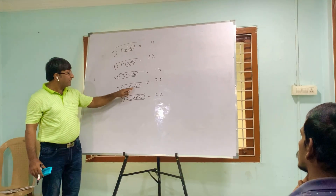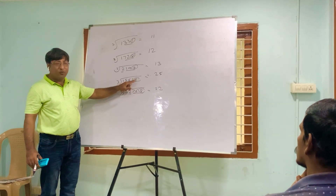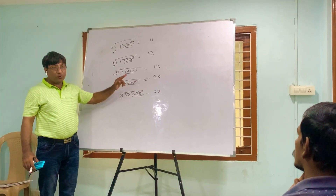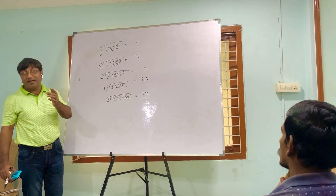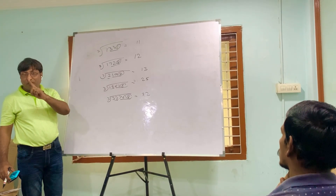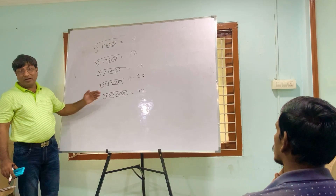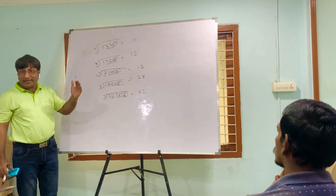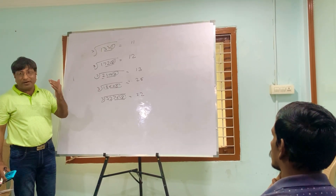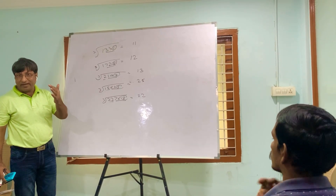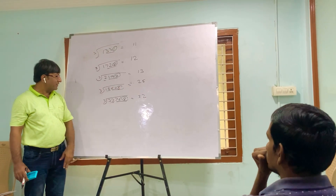For 15625: group of 3 is 625, unit 5. Multiply 5 three times — you always get unit 5. Write 5. Left number is 15: 2³ = 8, 3³ = 27 which is greater, so take 2. Answer is 25.